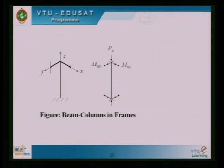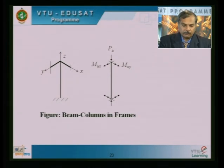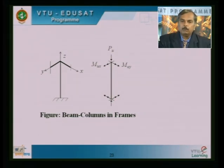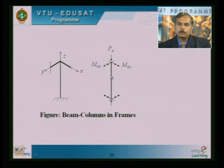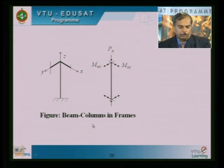For the biaxially loaded column, the column is subjected to Pu, MUx along the x-direction and MUy along the y-direction, represented by double-headed arrows. In multi-storey buildings, columns are not only subjected to axial load but also bending moments from beams framing in both directions. Such columns are referred to as beam columns, and all columns in framed structures are beam columns.